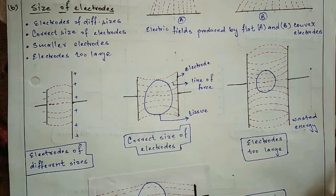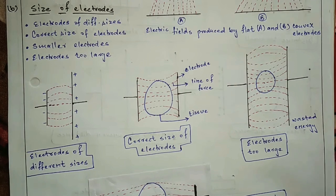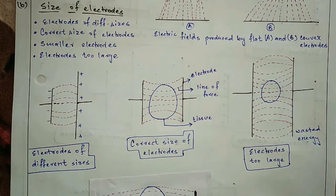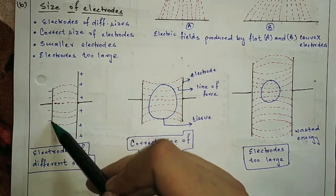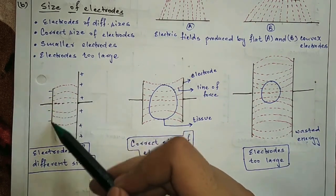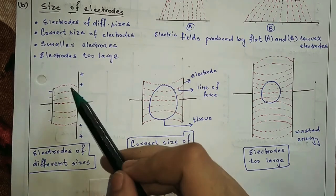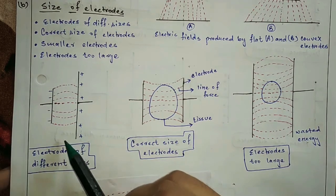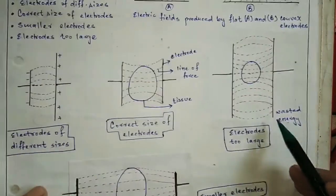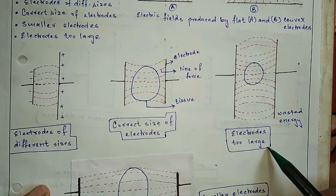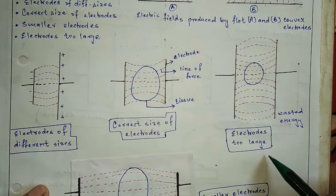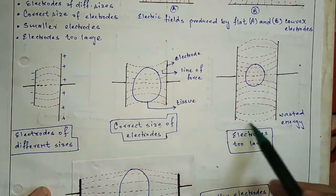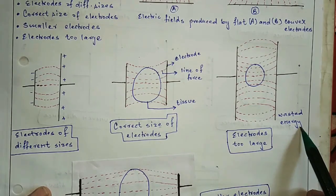The electrode should be bigger than the body part because the electric field spreads at the edges, so the body part should be in the center. However, the electrode should not be too large — if it is too large, the electric field disperses from the edges and this is a waste of energy, so it is not advisable.